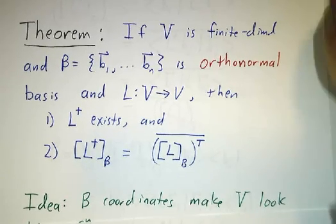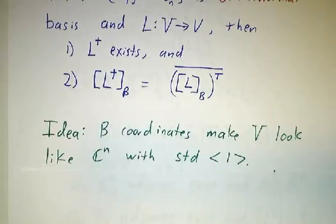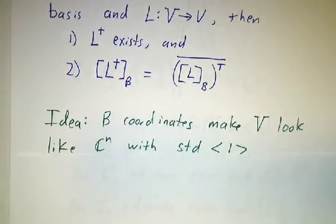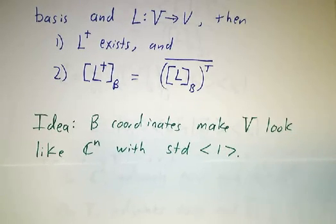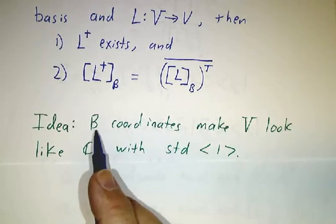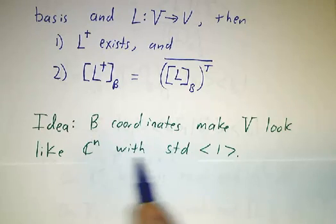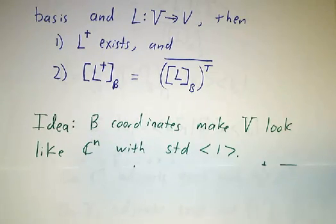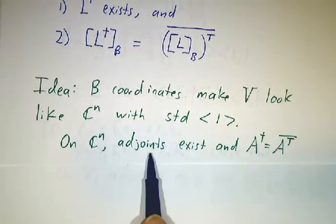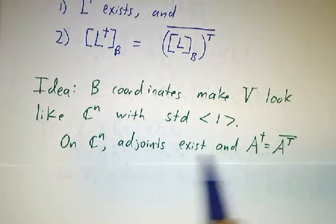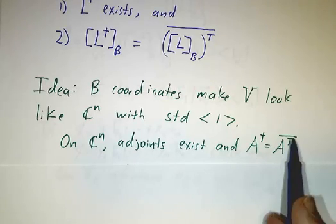So the idea is that whenever you take coordinates, you make a vector space look like R^n or C^n. Using orthonormal basis makes it look like C^n with the standard inner product. On C^n, you know how to do adjoints, they always exist, and you can get them by taking transpose conjugate.